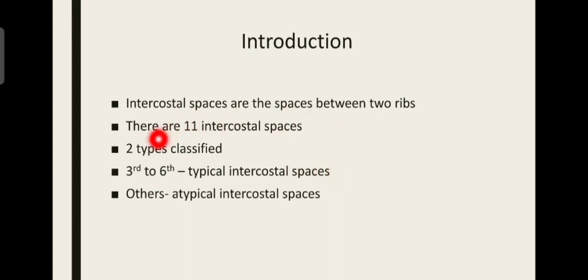There is another type of classification which is very important. The 3rd to 6th intercostal spaces are called typical intercostal spaces, while the others are called atypical. The nerves and arteries play a major role in determining whether a space is typical or atypical. Typical means they are the same; atypical means they are somewhat different. The 3rd to 6th intercostal spaces have the intercostal nerve and intercostal artery supplying only those spaces and not other areas such as the hand or abdominal wall. The 1st and 2nd intercostal spaces have nerves and arteries which also supply the arm, while lower than the 6th, all nerves and arteries supply the abdominal wall.